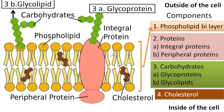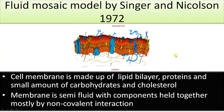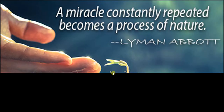So these are the four components of the plasma membrane as per the fluid mosaic model. The major backbone is formed by the phospholipid bilayer, followed by proteins, and then small amounts of carbohydrates and cholesterol. In short, the cell membrane is made up of a lipid bilayer, proteins, and small amounts of carbohydrates and cholesterol. The membrane is a semi-fluid structure and the components are held together by non-covalent interactions. And that is it about the fluid mosaic model.